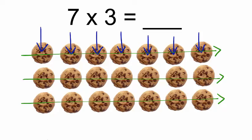Count the number of cookies in the picture. There are 21 cookies. So I can say seven into three is 21.